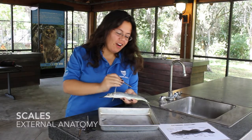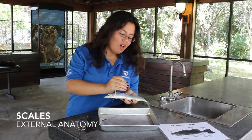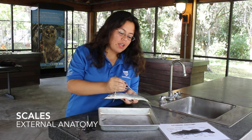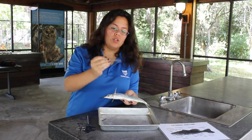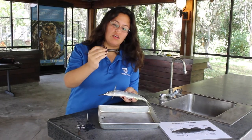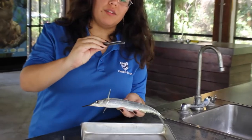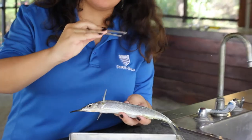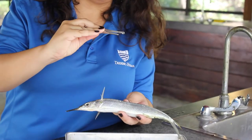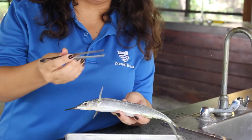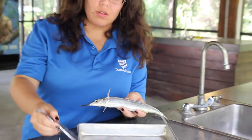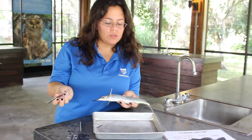Another key feature are the scales. All fish have scales — even sharks, they're just very small. You can see here this clear feature; this is the scale itself. In some fish you can actually use the scale to age the fish.